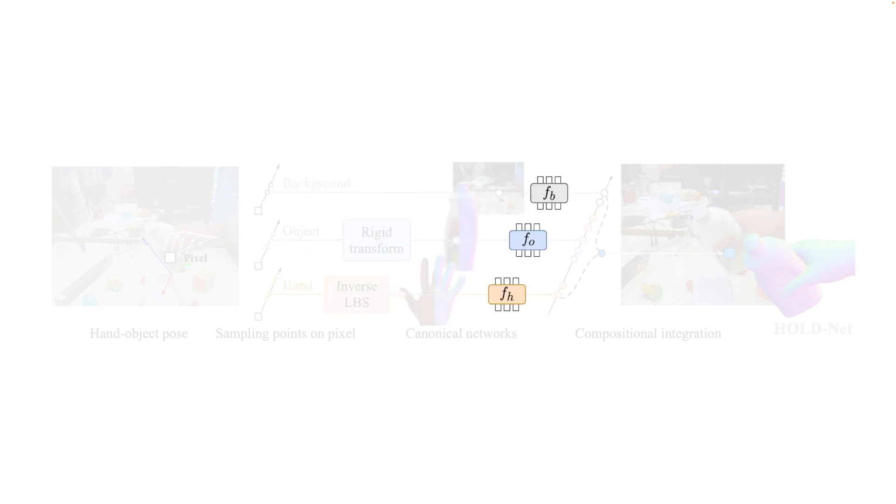Using the canonical samples for each model, we query color and density with an implicit shape and texture network. Samples from each model are sorted by depth and merged to perform a compositional integration into the target RGB value. Supervised by the raw pixel color values and auxiliary losses, our method reconstructs realistic 3D hand object surfaces.